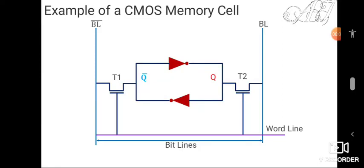Welcome back. In the last lecture we saw the working of SRAM, using two inverters where the output of one was connected to the input of the other. We saw how information is stored in SRAM through read and write operations. In actual practice, these inverters are made using CMOS transistors, so let's see how the actual circuit of SRAM looks.